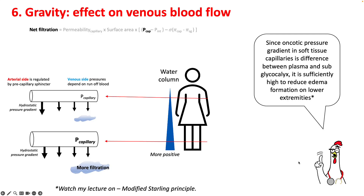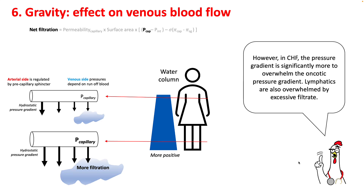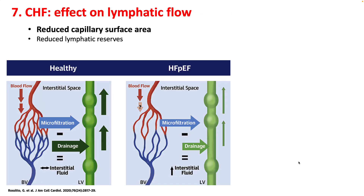Because of gravity, the pressure of the water column is transmitted from the veins into the capillaries, increasing peak capillary pressure and filtration rates. In heart failure, because of elevated venous pressure and malfunctioning lymphatics, filtration remains in the interstitium, resulting in edema formation.